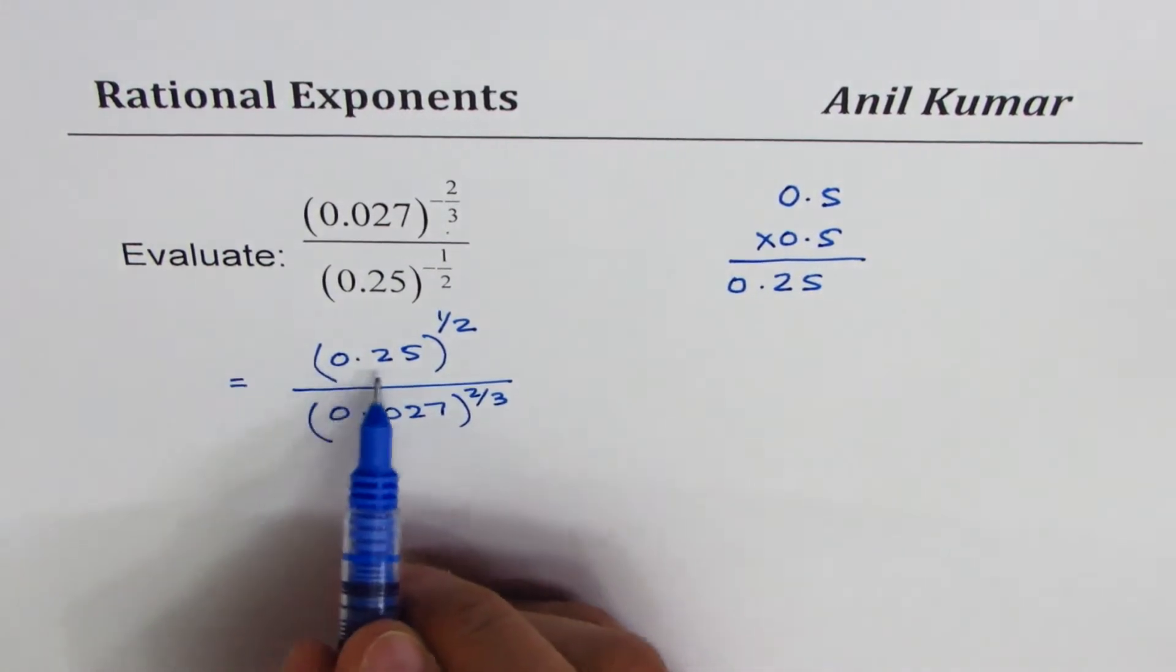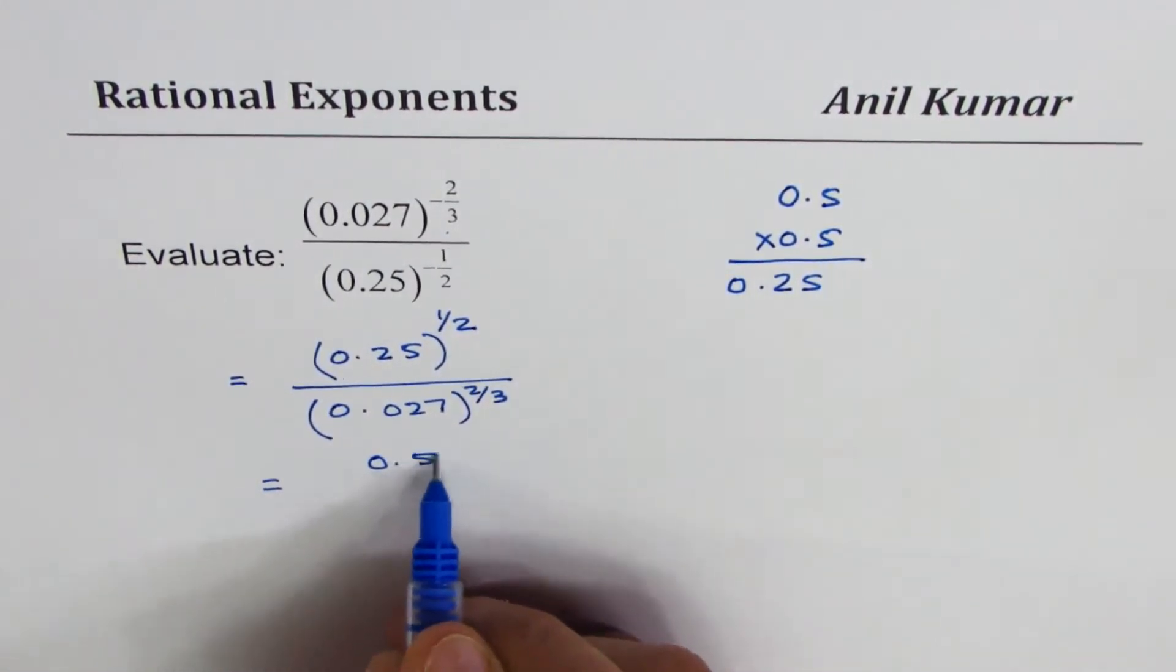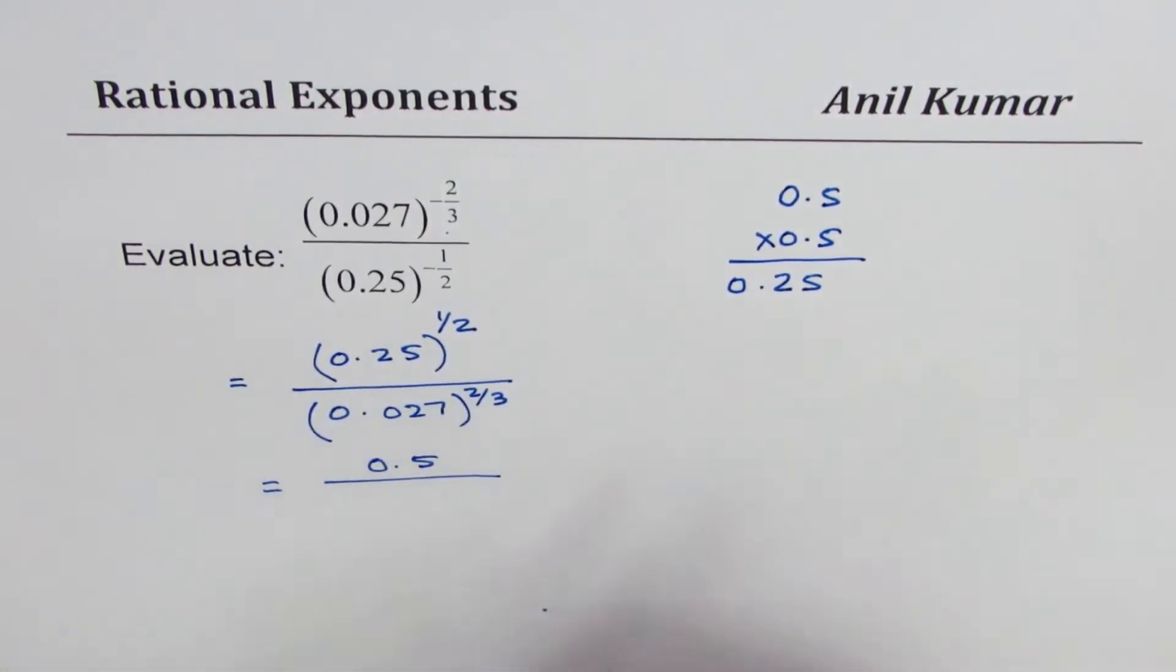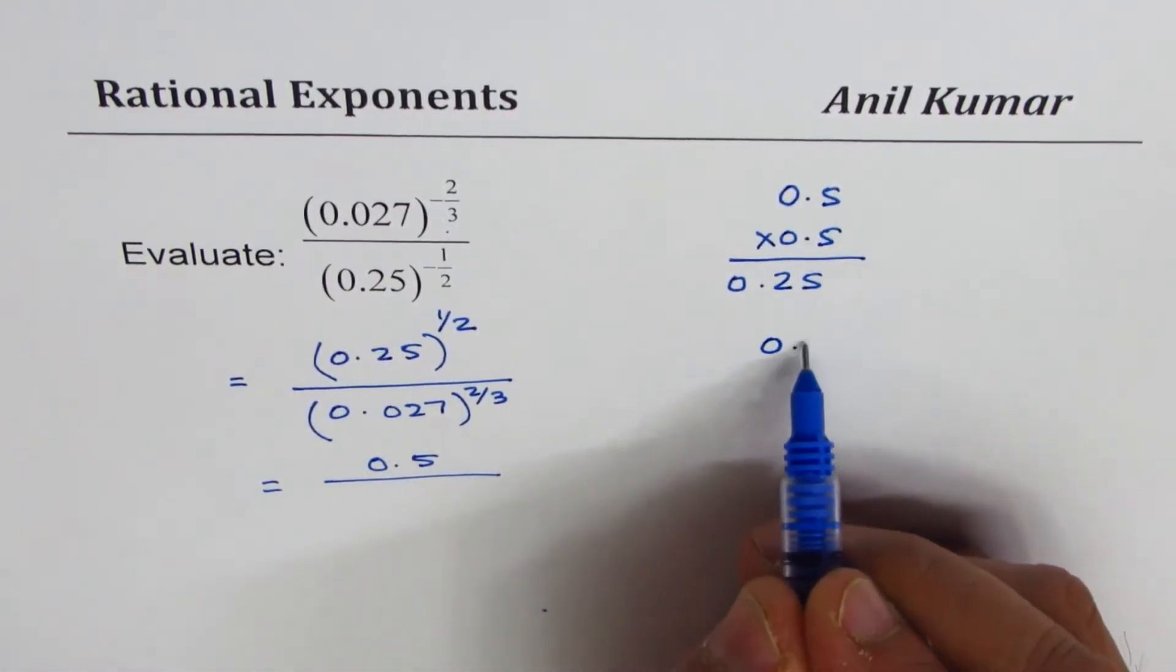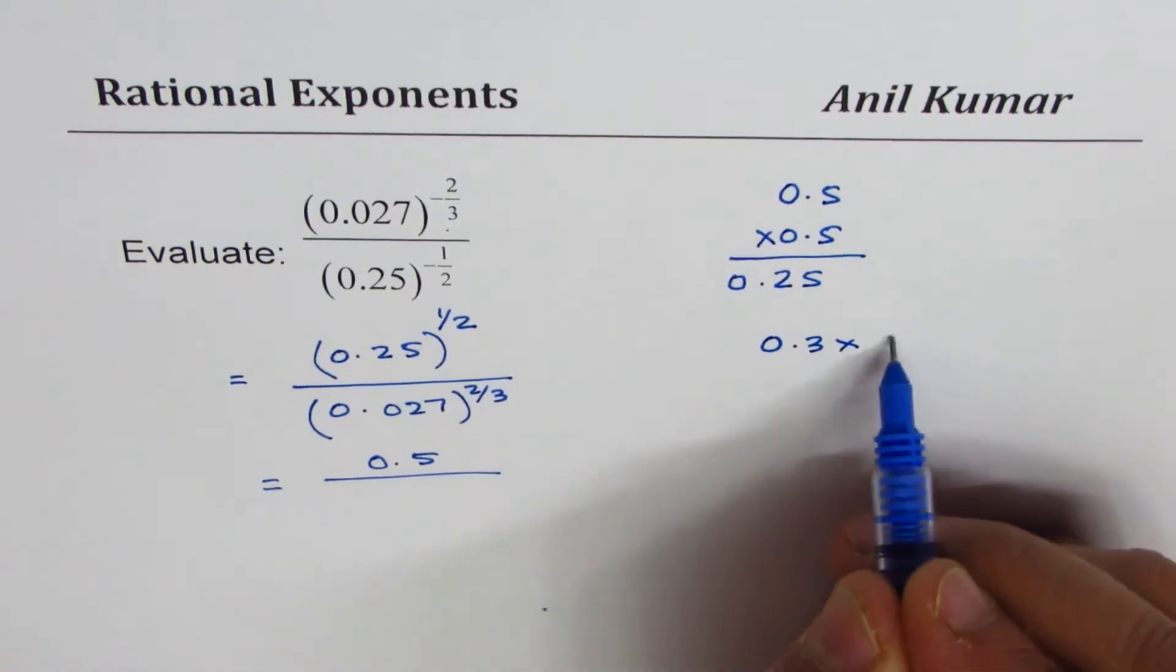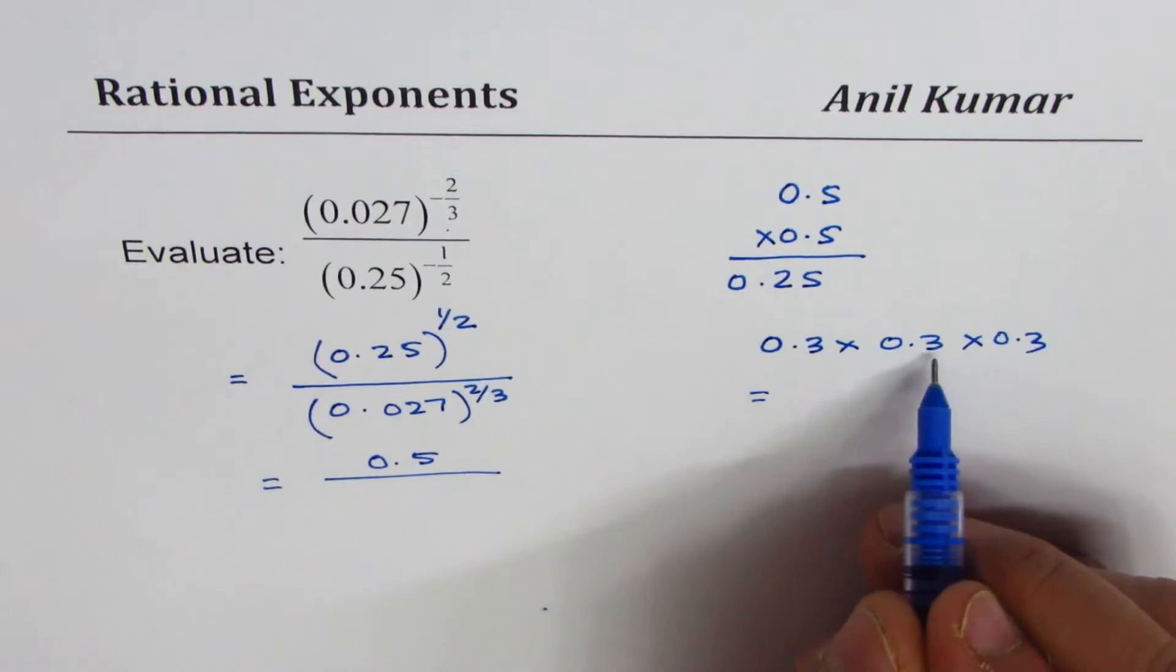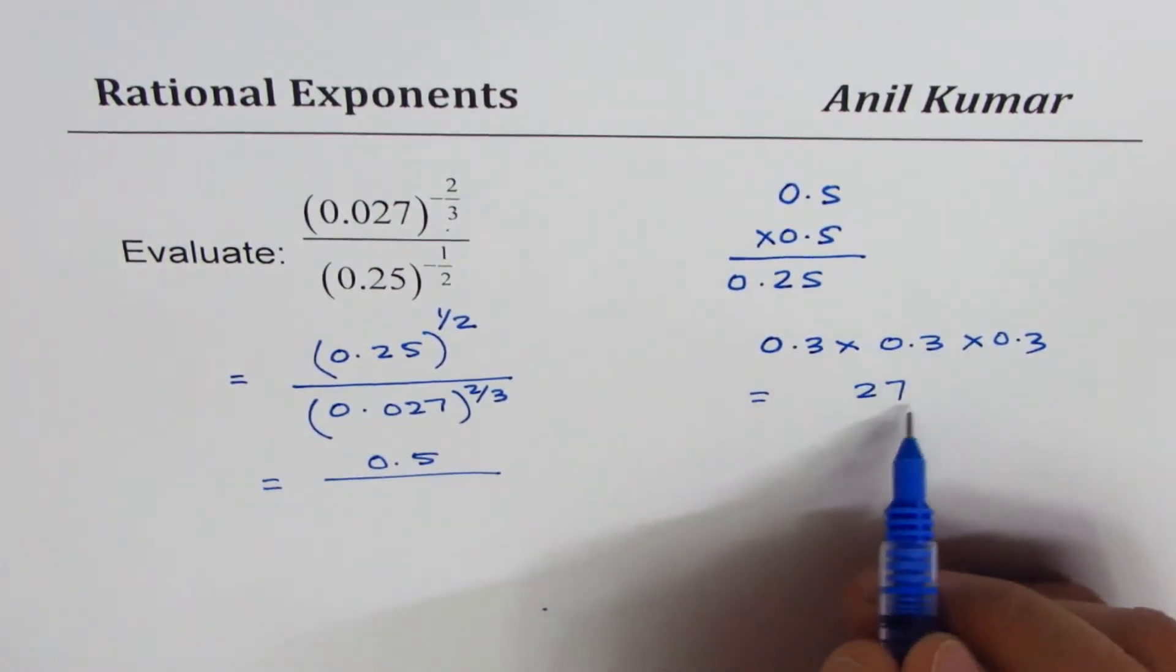Here in the denominator we have 0.027 square and cube root. Now what is 0.3 cubed? 3 times 3 is 9, 9 times 3 is 27. You need three decimal places, so decimal you need to put here.